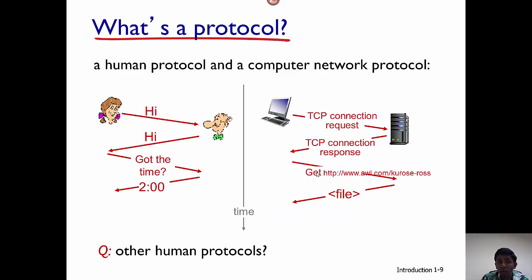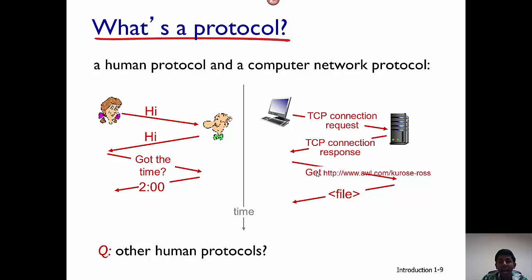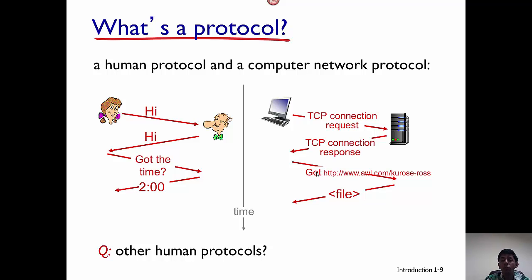Let's look at a human analogy to understand how a protocol works. For example, there is Alice and Bob — Alice wants to know what's the time. She first says 'hi' and Bob responds by saying another 'hi.' Then she asks Bob for the time and Bob replies that it's two o'clock. Similarly, when a computer wants to download a web page, say you want to access google.com, your computer would first send a TCP connection request to the server hosting the web page. Once the request is received by the server, the server sends back a response. After that, the host sends a request for the particular website it wants to visit, and then the server returns that file. This is an analogy of how computers communicate on the internet.